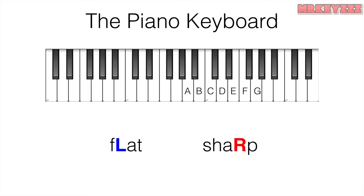Now let's figure out where all the sharps are on the keyboard. Since this note is C, C sharp is the black key to the right. This is D and D sharp. This note is E, but E sharp is not a black key. Remember, sharps are the closest notes to the right of a white key, therefore this is E sharp.